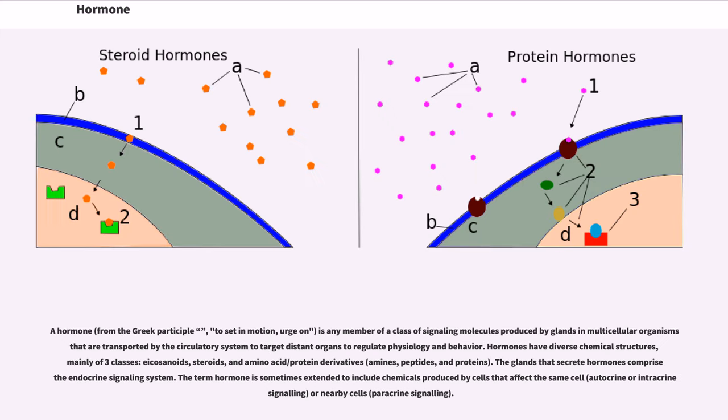Hormone. A hormone, from the Greek participle to set in motion, urjon, is any member of a class of signaling molecules produced by glands in multicellular organisms that are transported by the circulatory system to target distant organs to regulate physiology and behavior.